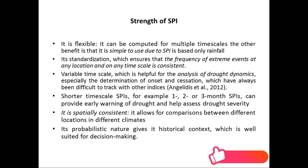A further strength is its variable timescale, which is helpful for analyzing drought dynamics, especially determining the onset and cessation of droughts, which have always been difficult to track with other indices. Shorter timescales of SPI — for example, one, two, to six months — can provide early warning of drought and help assess drought severity. SPI is also spatially consistent, allowing comparisons between different locations and different climates, and its probabilistic nature gives historical context well suited for decision making.